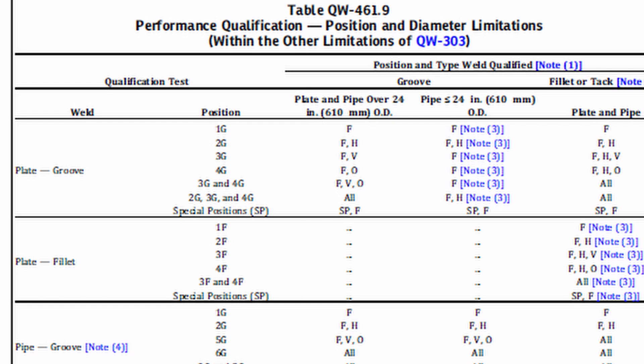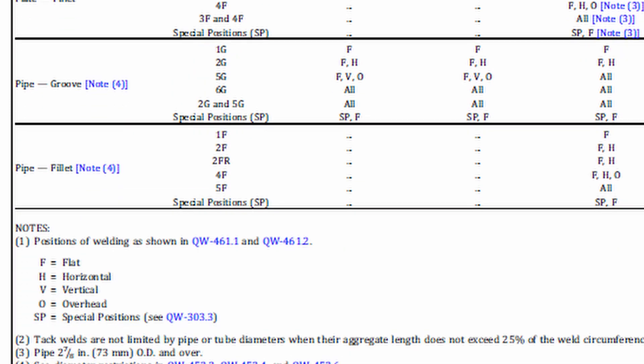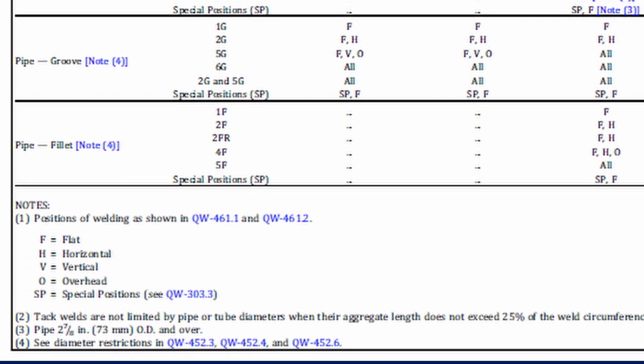From the qualification table, qualifying with 2G, 3G, and 4G for groove welds of plate qualifies for all positions — flat, horizontal, vertical, etc. For pipes, a welder passing the performance qualification tests with 6G, or with 2G and 5G combined, will qualify for all positions.